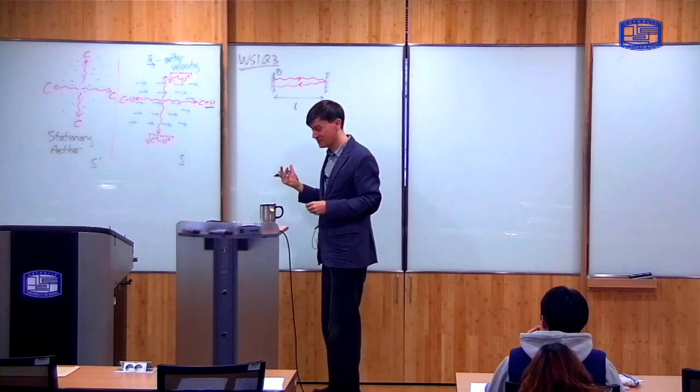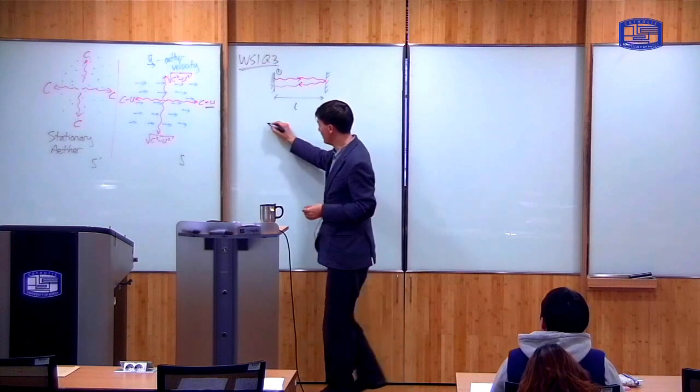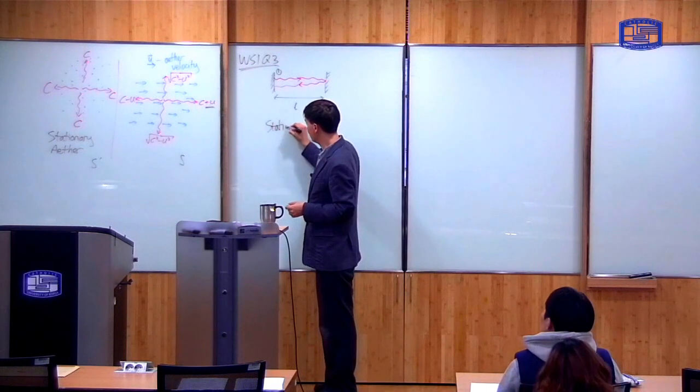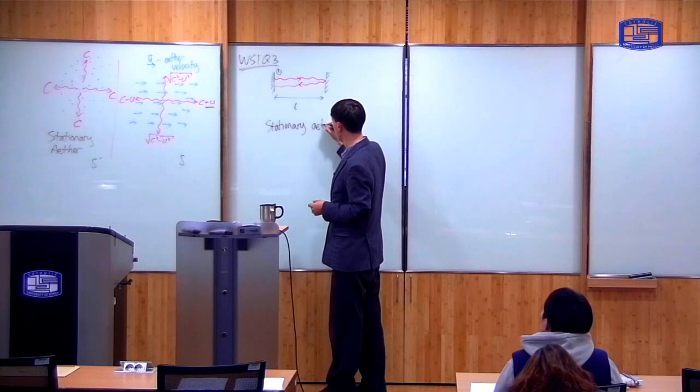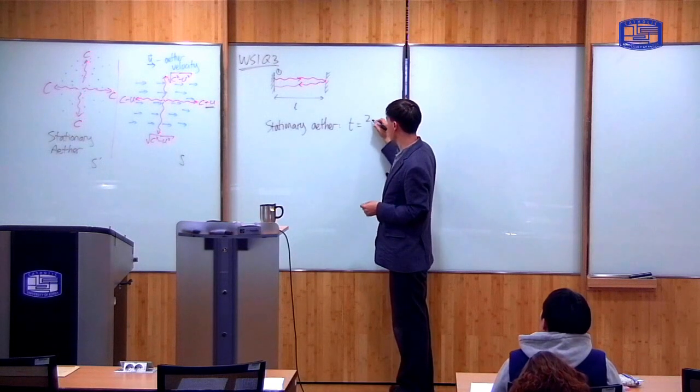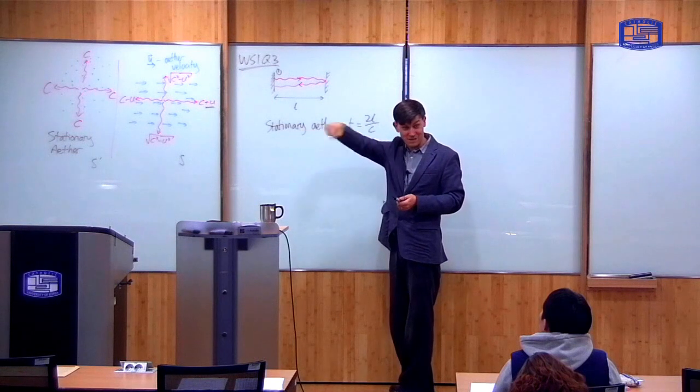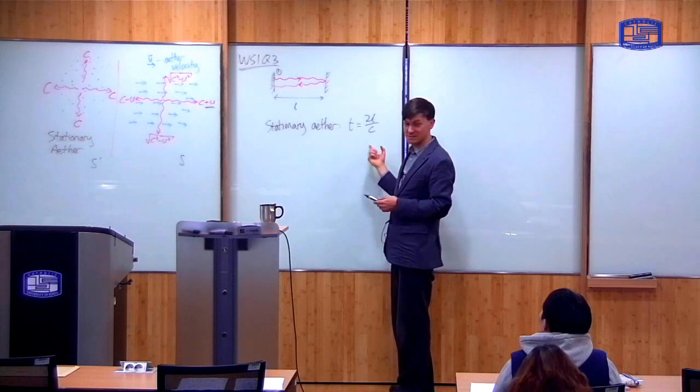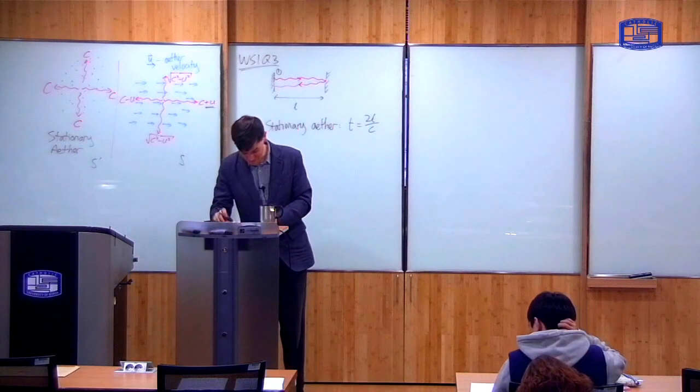And we want to know how long it takes. So if the ether is stationary, then it's dead easy. If the ether is stationary, then the time it takes is simply distance divided by speed. The distance is 2L. It goes there and comes back. Speed of light is C. But that's not what the question is asking you, because that's a bit boring.